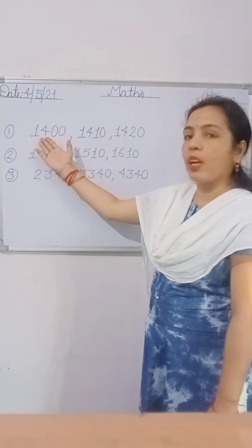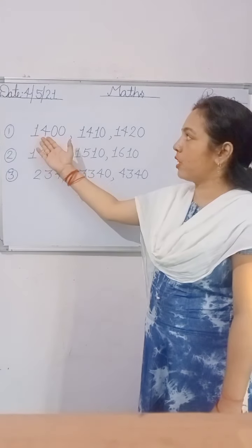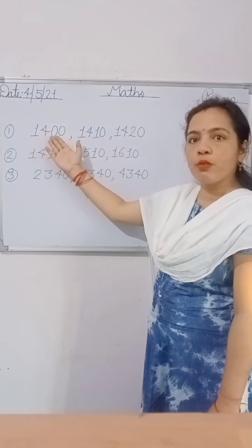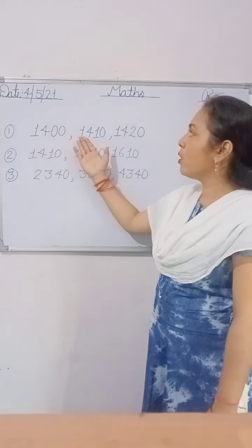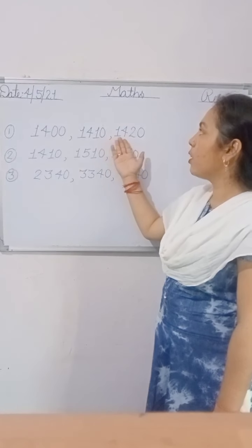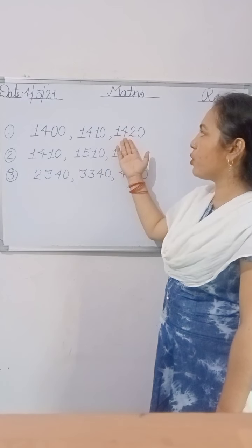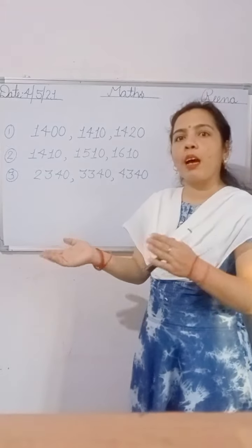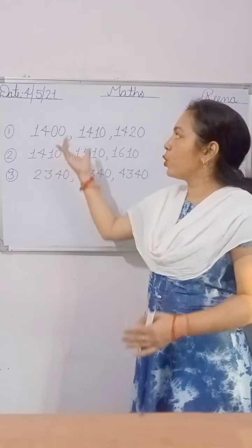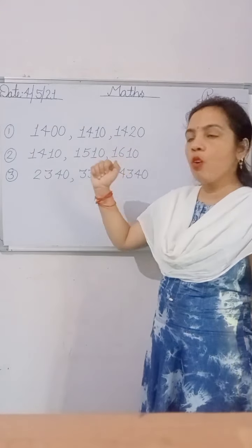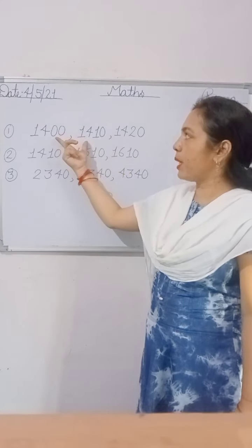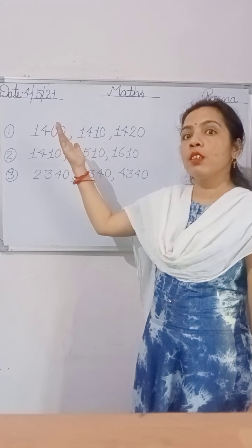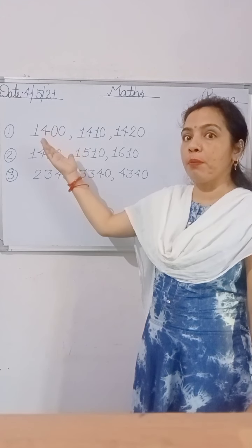In the first set, I have selected 1400, 1410, 1420. Now, firstly tell me what is the gap between two consecutive numbers. For finding the gap, we compare our numbers.